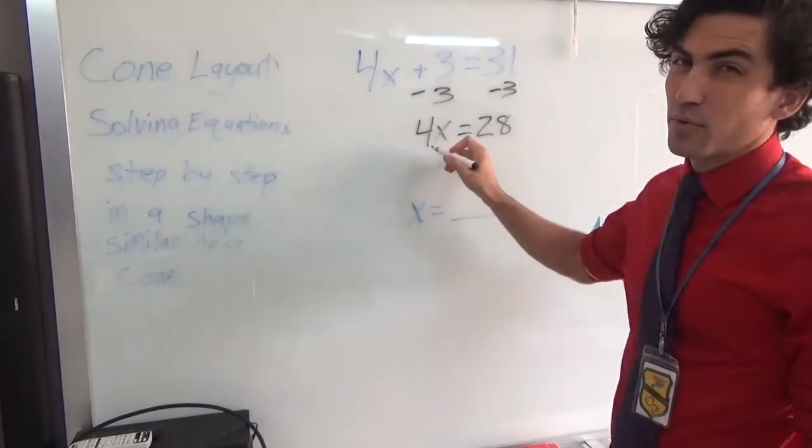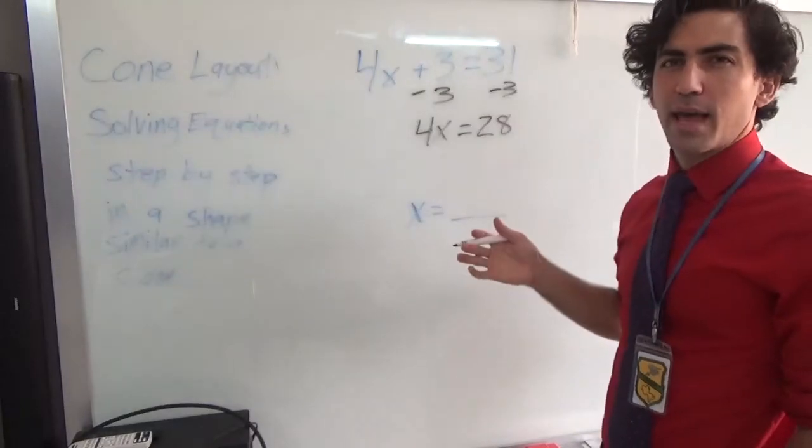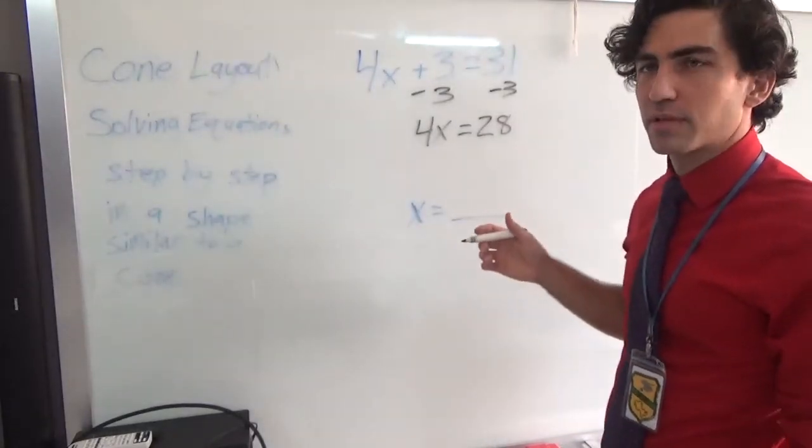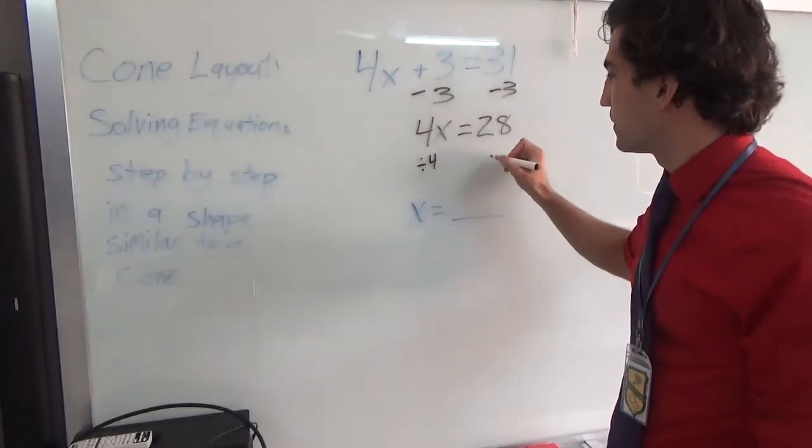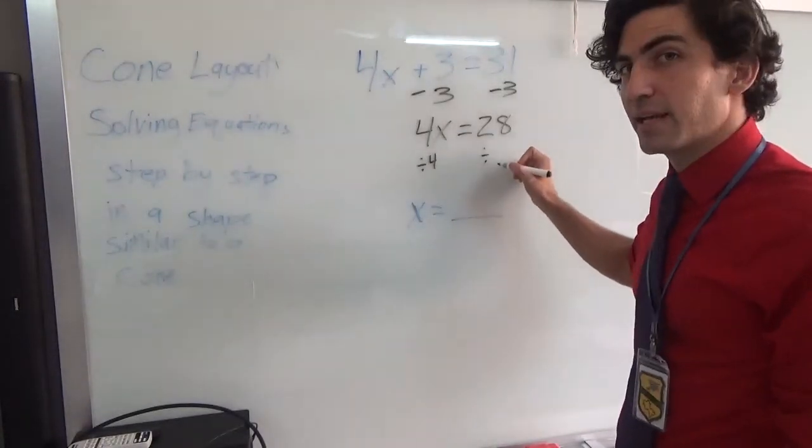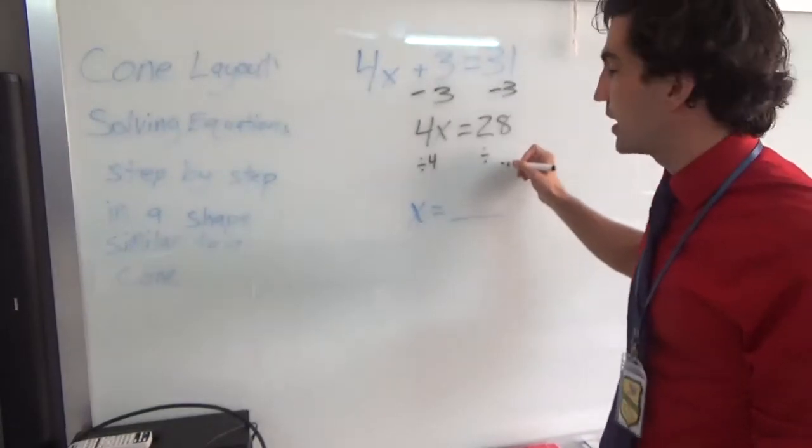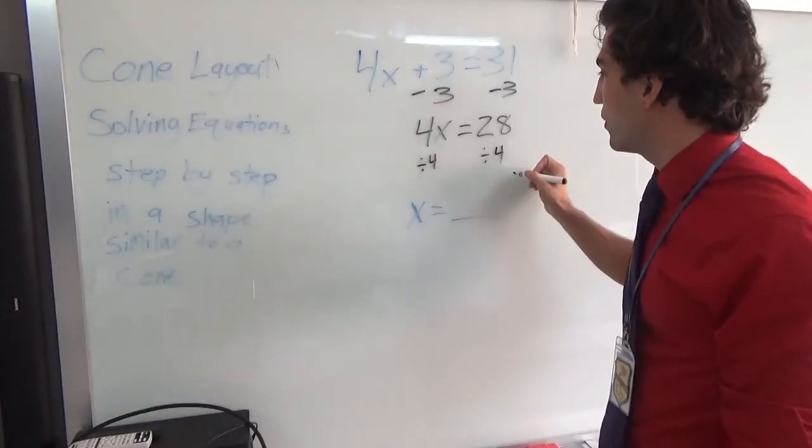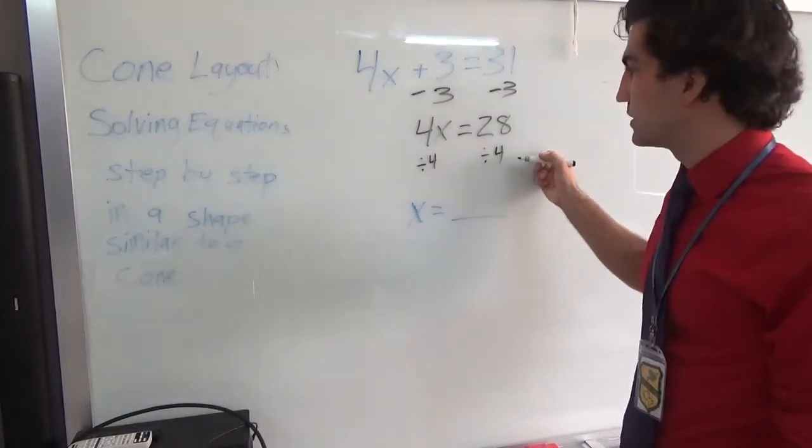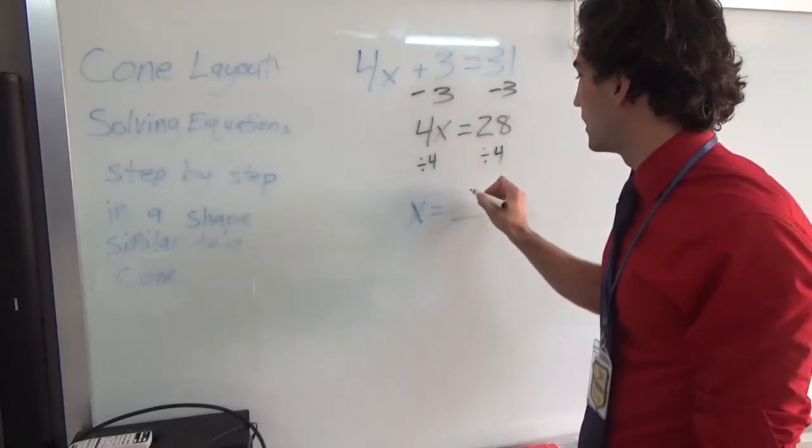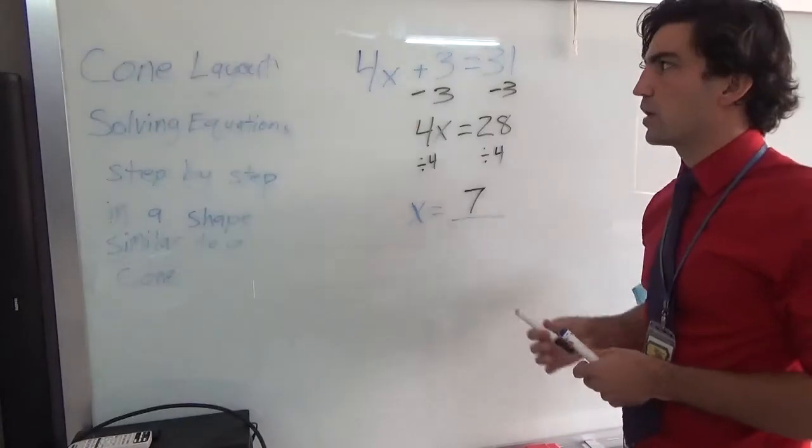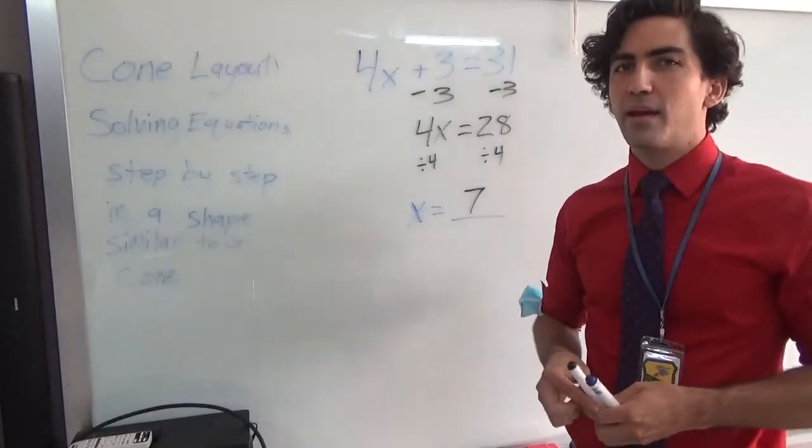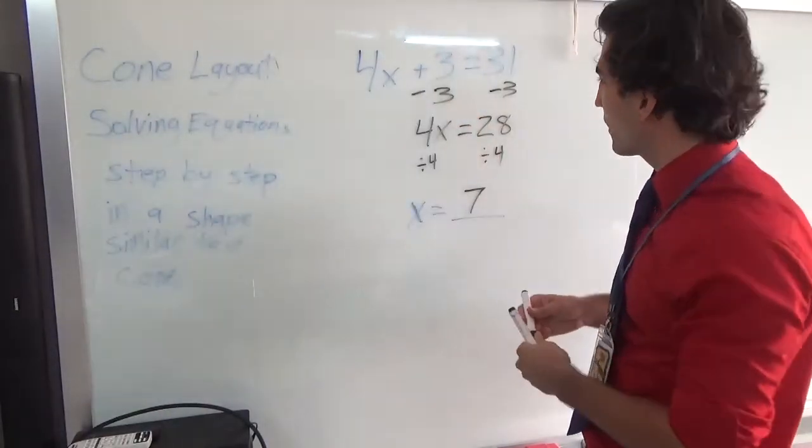And so, now we have 4 times x. But we want to get x by itself. So we do the opposite of what's happening. Right now, it's multiplying. So we're going to divide by 4. Whatever we do to the left-hand side, we have to do to the right-hand side. Divide by 4. 28 divided by 4 is 7. So this is the main way to do the cone format.